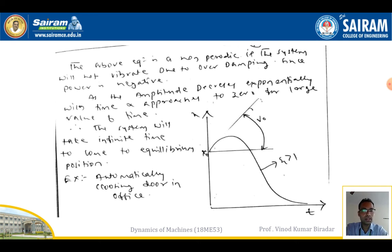The damping causes the system to take a very long time to reach near the equilibrium position — it approaches but never truly reaches it, going to infinity. This confirms zeta is greater than 1, with initial velocity v₀.